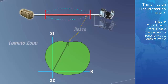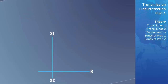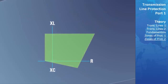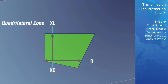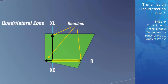Another custom zone is known as a quadrilateral zone of protection. This type of zone allows you to set the reactance and resistive upper and lower boundaries to create your own custom shape to match the needs of your power system. In this type of zone, there are essentially two reaches: one in the inductive direction and one in the resistive direction.